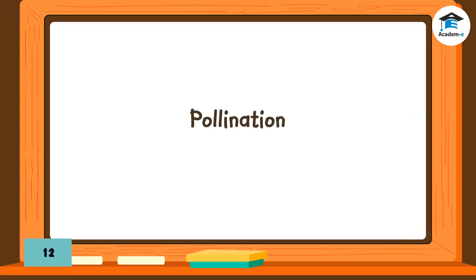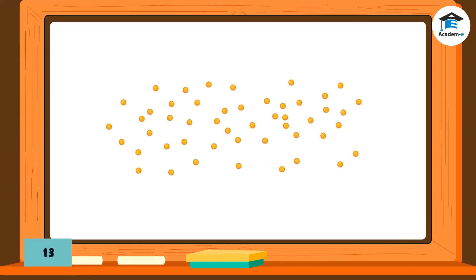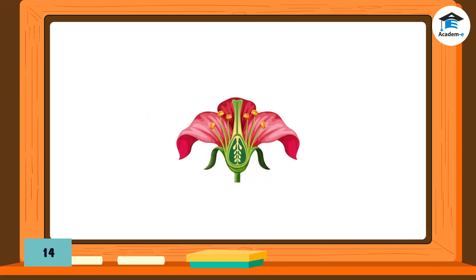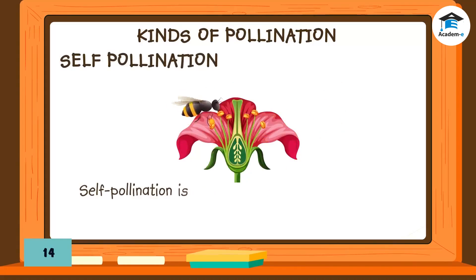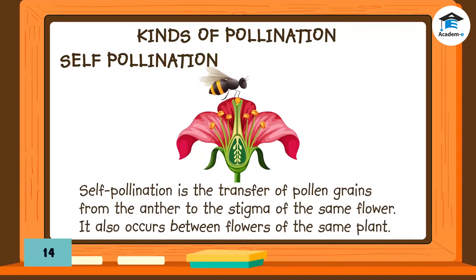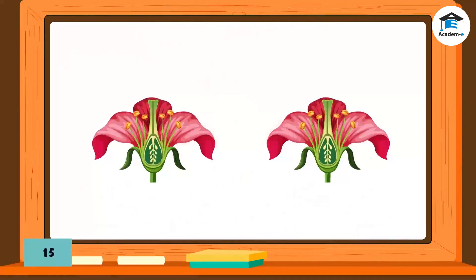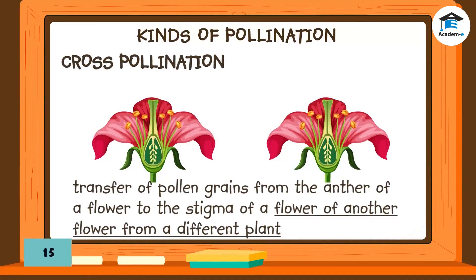Pollination: Since plants are almost immovable, agents help in transferring pollen grains. There are two kinds of pollination. Self-pollination is the transfer of pollen grains from the anther to the stigma of the same flower — it also occurs between flowers of the same plant. Cross-pollination is the transfer of pollen grains from the anther of one flower to the stigma of a flower from a different plant.